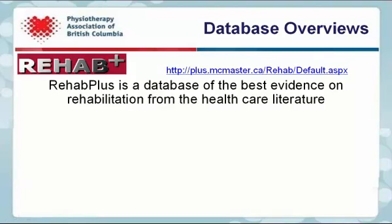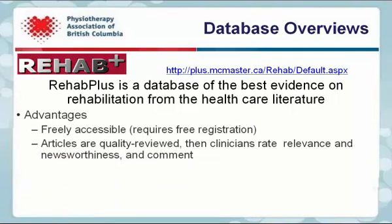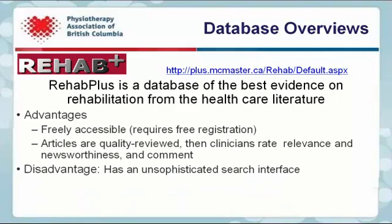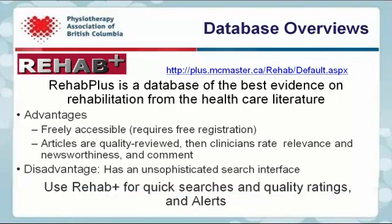RehabPlus is a searchable database of the best evidence from the healthcare literature on rehabilitation. The main advantages are that it is freely accessible, although free registration is required, and the articles are quality reviewed and comments are provided on their relevance and newsworthiness. A disadvantage is that it has an unsophisticated search interface that does not allow you to apply limits such as publication year. RehabPlus should be used for quick searches, quality ratings, and to set up alerts.